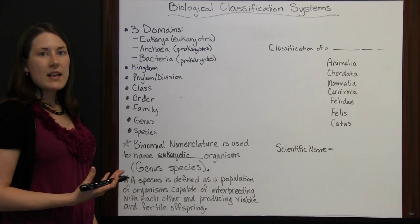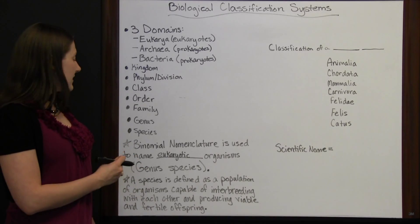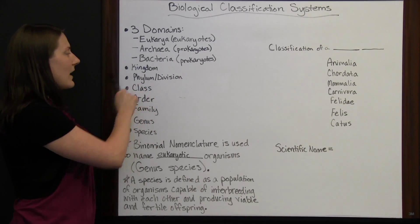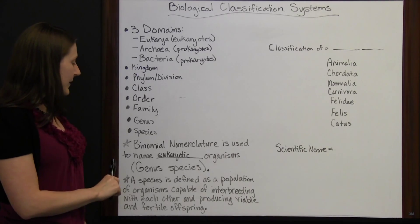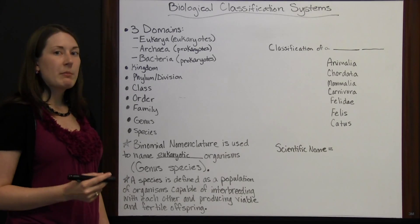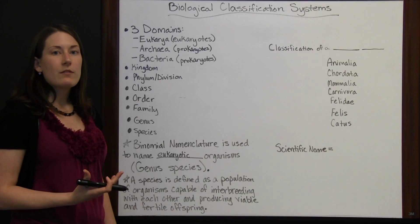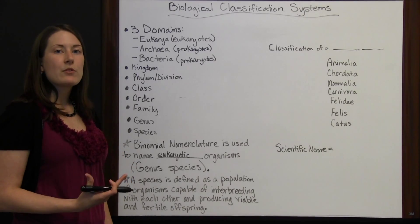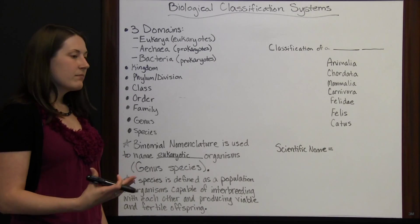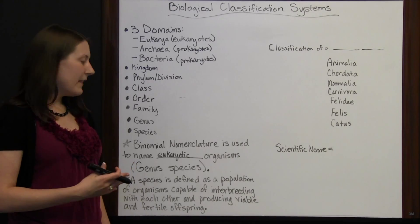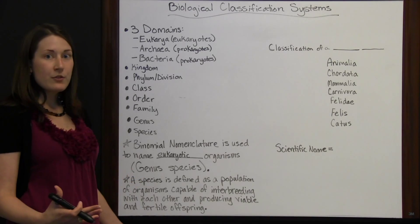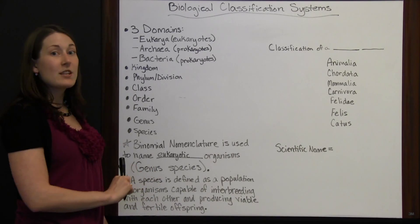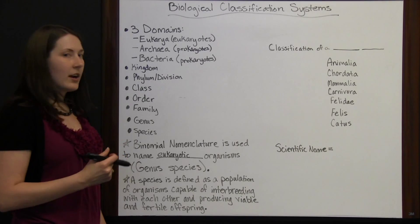Most organisms have a more common name, but there is also a scientific name where you can see the genus and species, and from that determine the family, order, class, phylum, kingdom, and domain that organism fits into. A species is defined as a population of organisms capable of interbreeding and producing viable and fertile offspring — offspring that are both alive and healthy and able to reproduce. Each species only consists of organisms that can breed with each other and produce viable, fertile offspring.